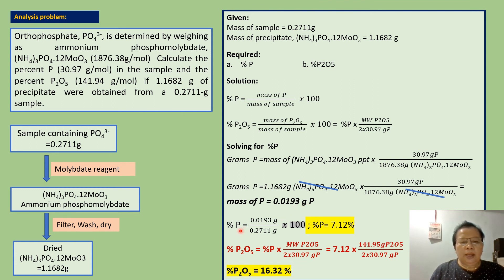Percent phosphorus equals 0.0193 divided by 0.2711 times 100 and the answer is 7.12 percent phosphorus.